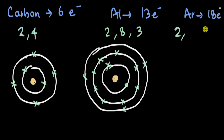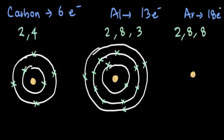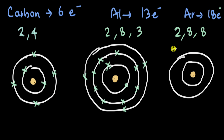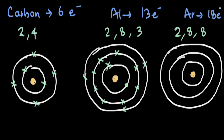For argon with 18 electrons: the first shell takes two, the second takes eight, and the remaining eight go to the third shell. That gives a configuration of 2, 8, 8. Drawn out, argon has a first shell of two, a second shell of eight, and a third shell of eight electrons.